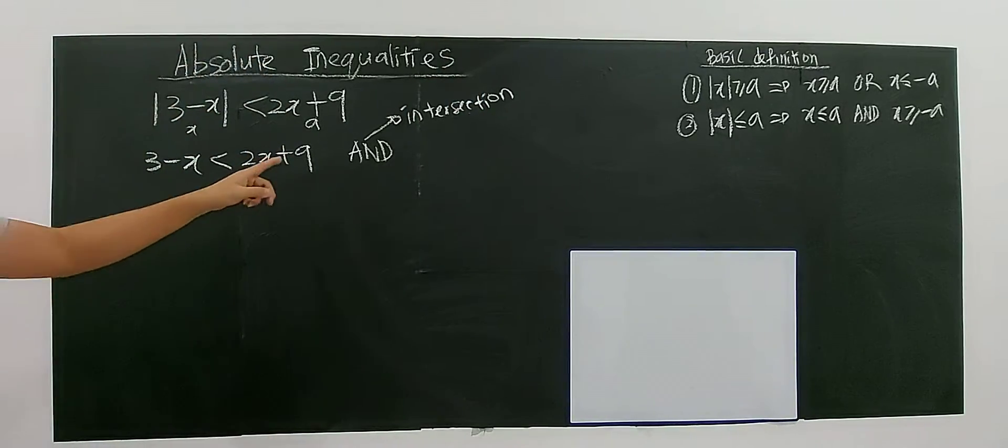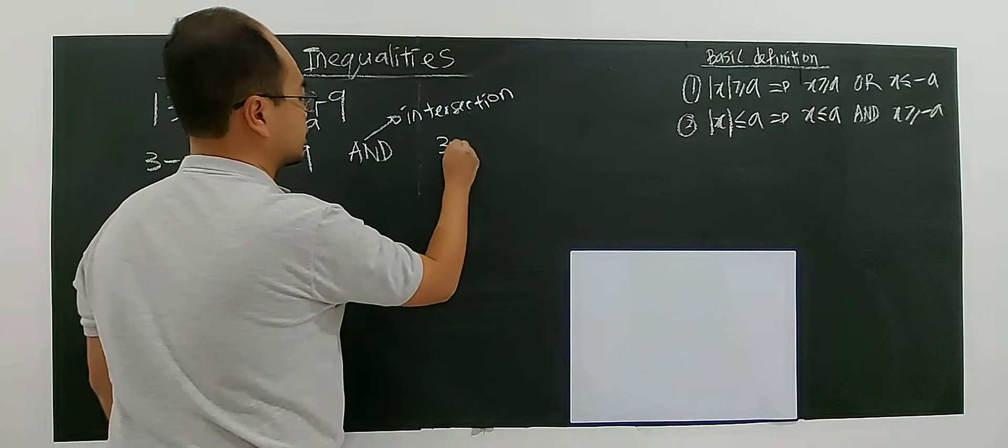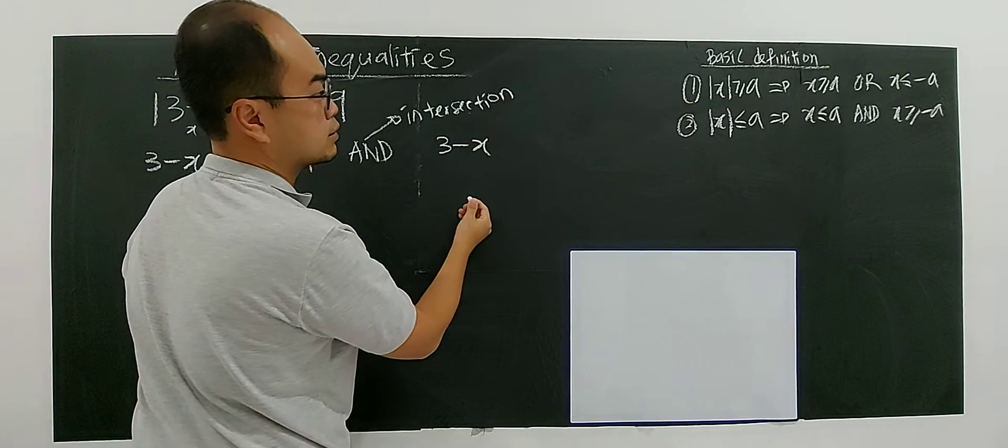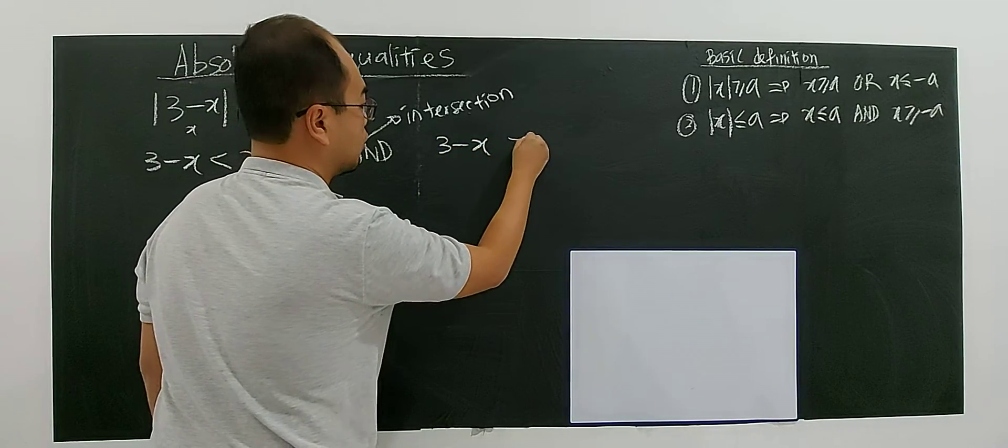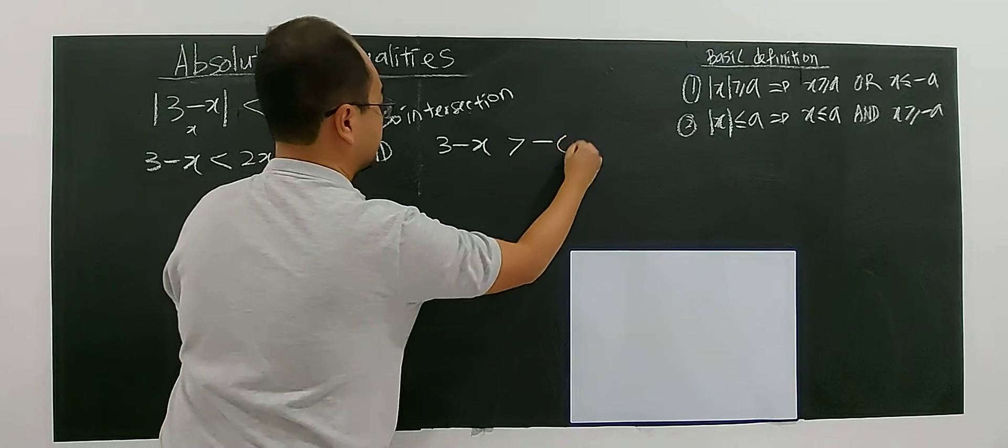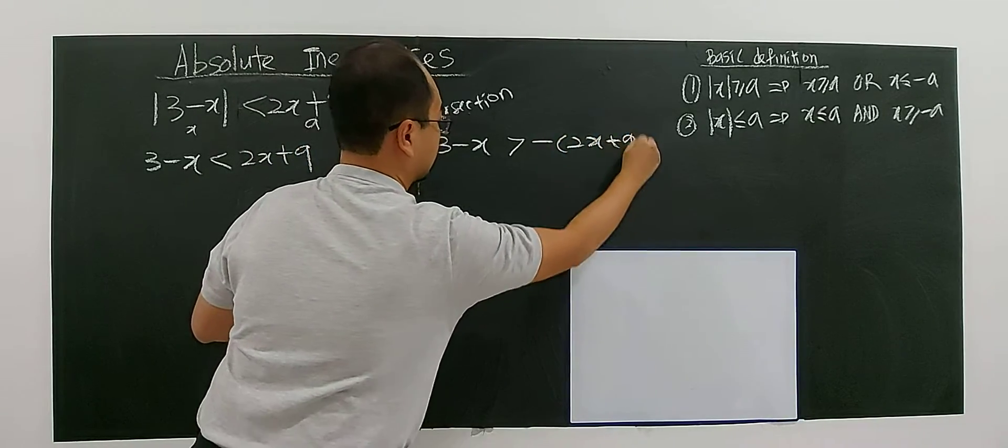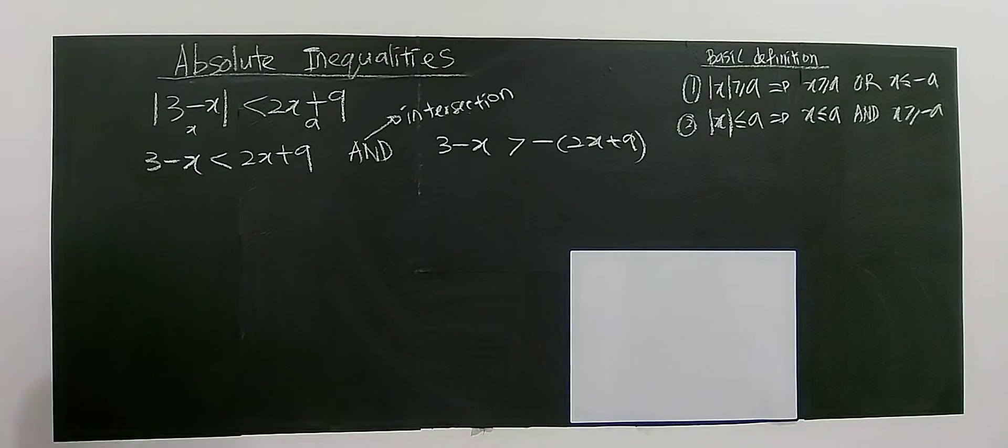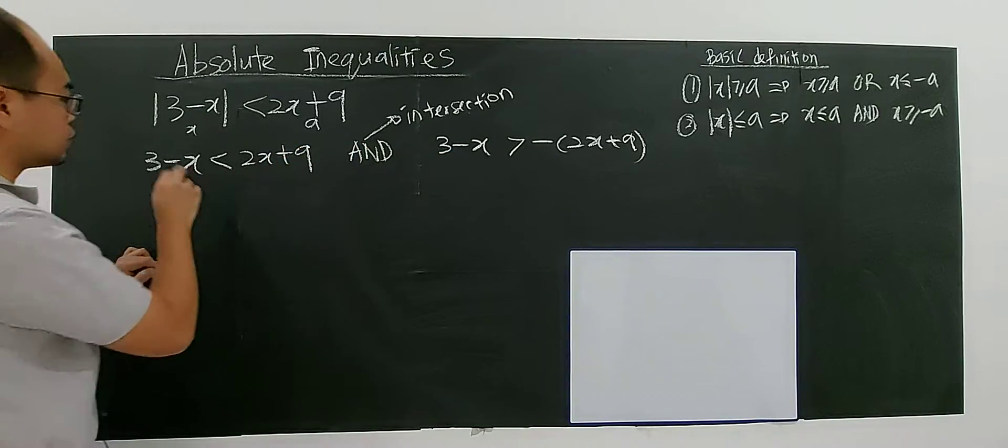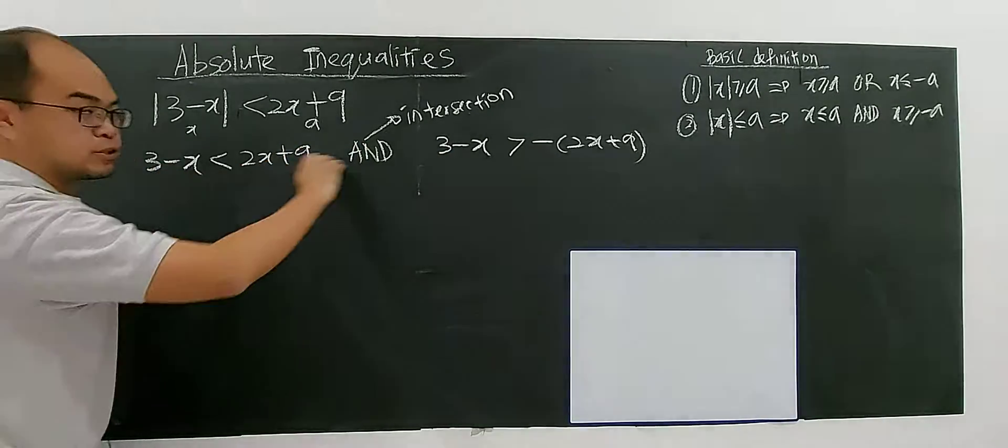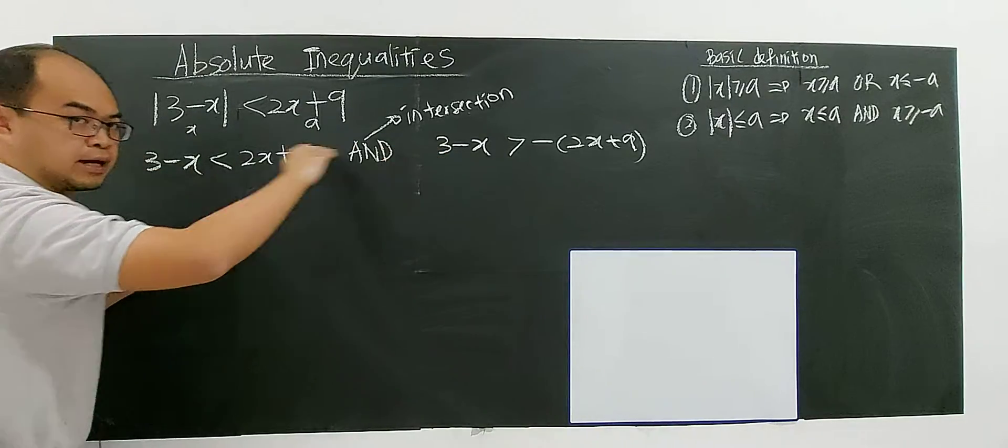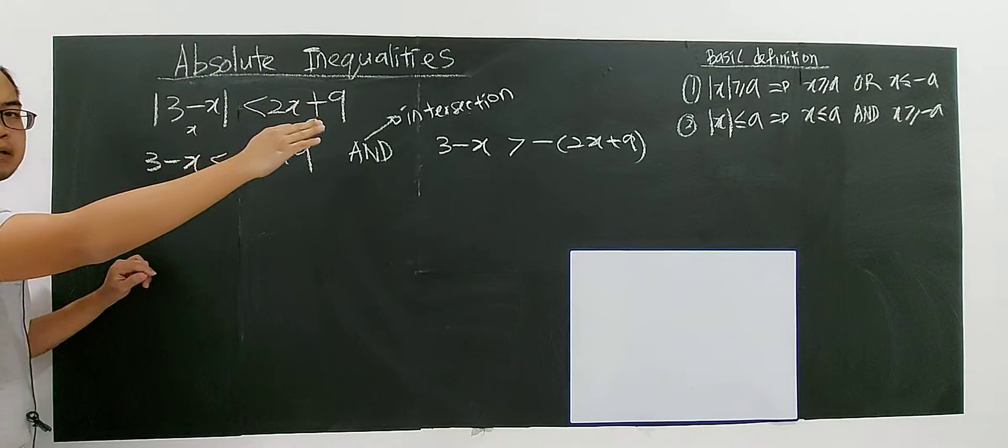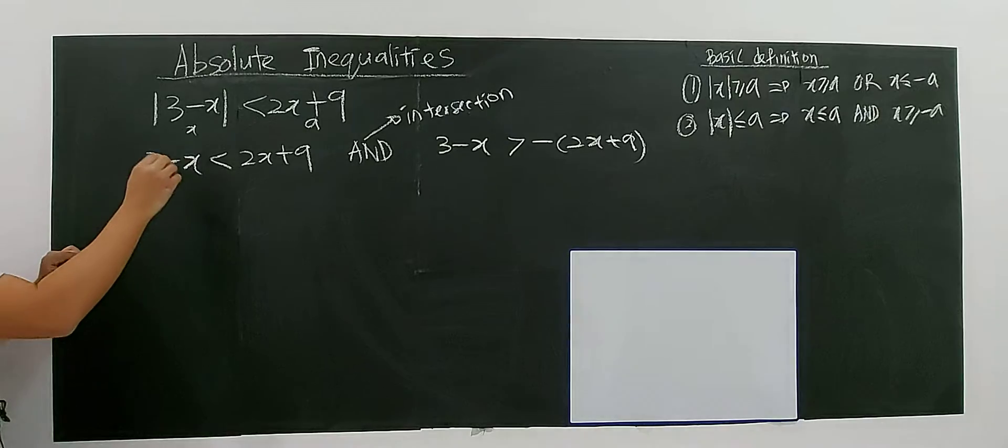So, and the other one will be 3 minus x, 3 minus x more than negative of a, right? More than negative of a. So then, after you must make sure this line is correct by applying the formula. You are correct in applying the formula.